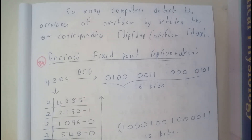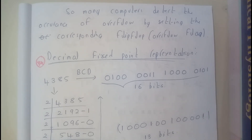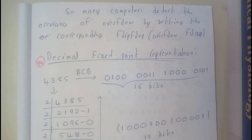Basically, BCD and binary values may look related, but the number of bits occupied by BCD will be greater than the number of bits occupied by binary representation. If you compare them, they are not equal — they don't look similar. Let us try this in this tutorial.